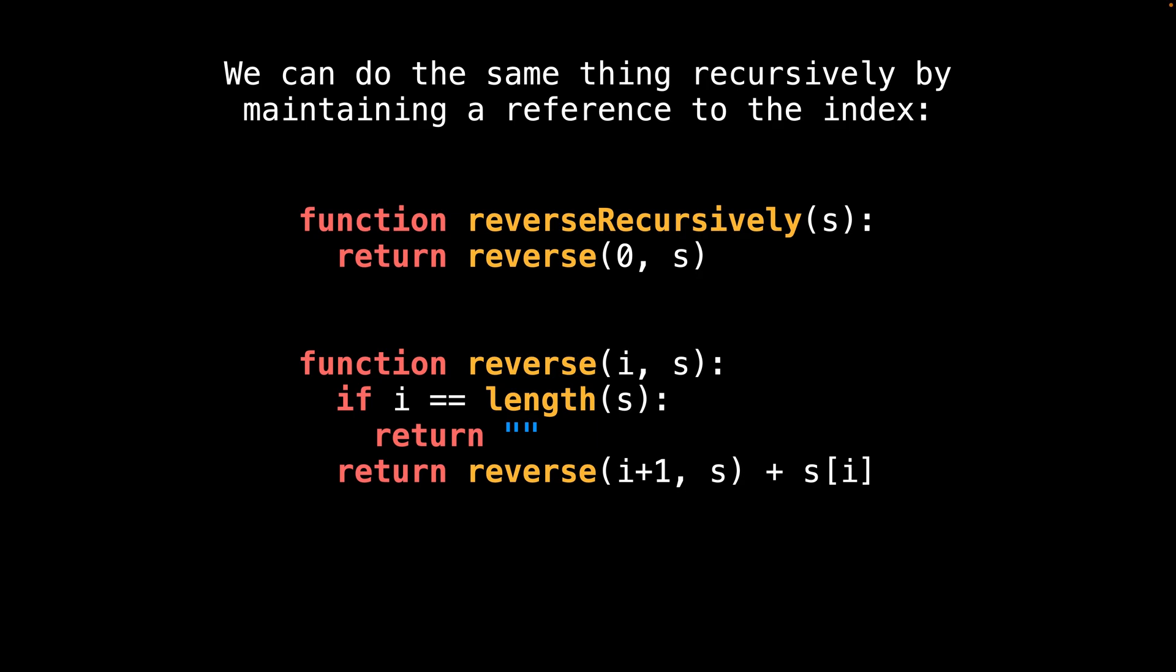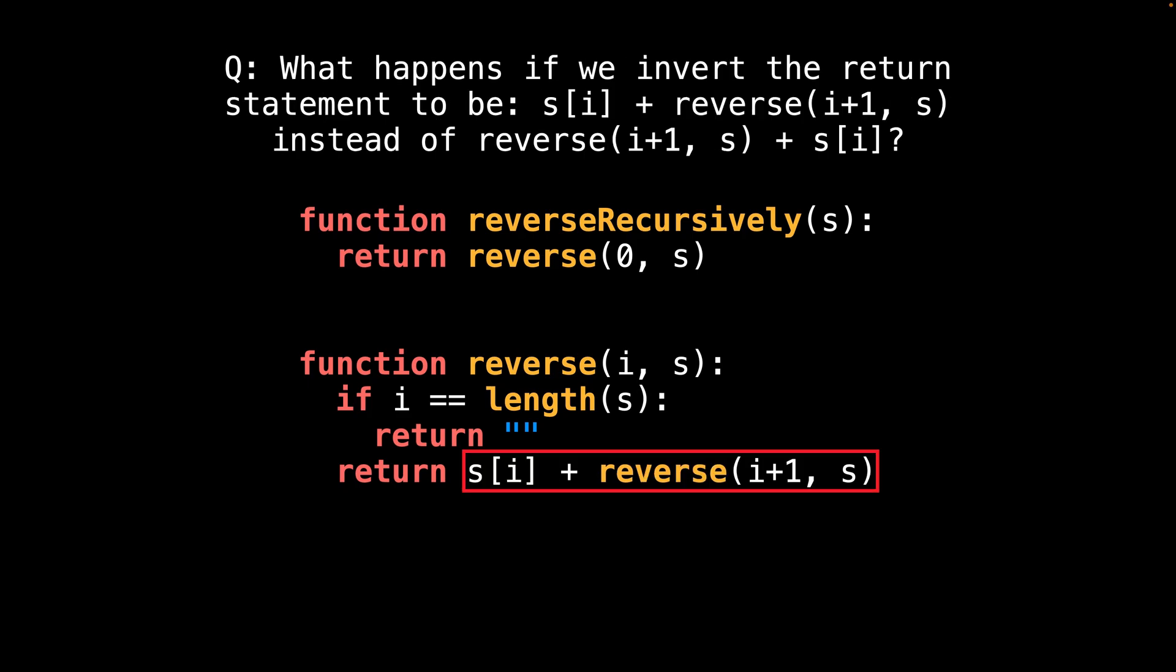Notice that on the last line, we add the character to the current string position after the recursive call to reverse the string. What happens if we invert the return statement so that the current character is before the recursive call to the reverse function? I'll give you a moment to think about that.